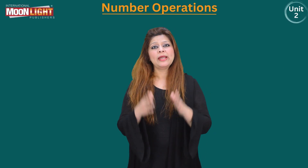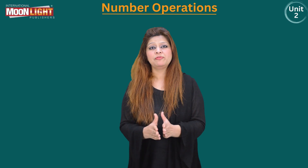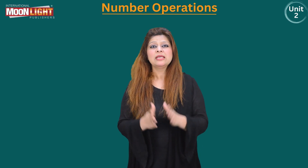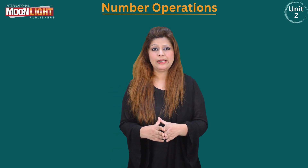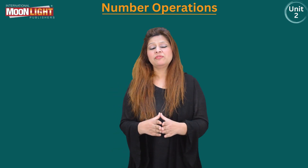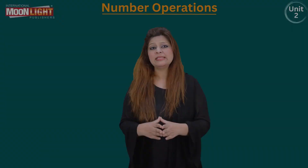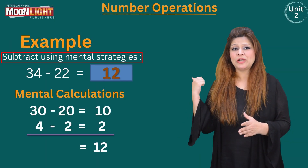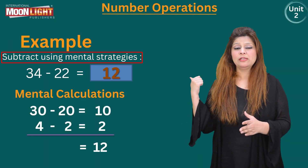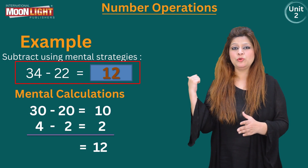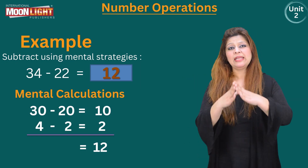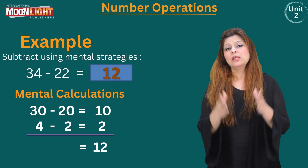First I am going to solve an example for you. This example will make the concept clear — which strategy we are using. So the statement of the example is: subtract using mental strategies, and the question is 34 minus 22 equals an empty box.